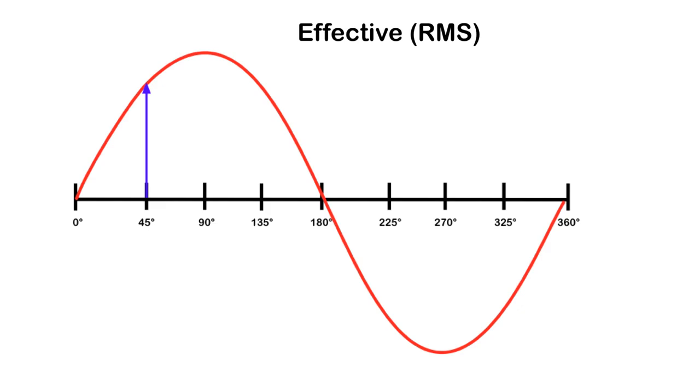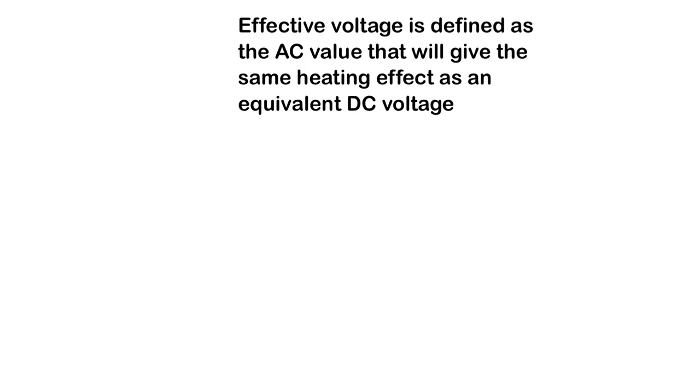Now let's talk about this idea of effective, which is sometimes called RMS value. So we see here it's at about 45 degrees into the cycle. What is this RMS value? Basically, RMS or effective is defined as the AC value that will give the same heating effect as the equivalent DC voltage, which sounds a little confusing, but let's talk about how it looks.